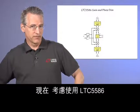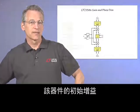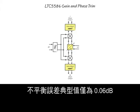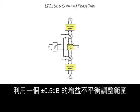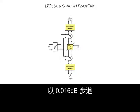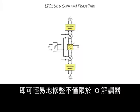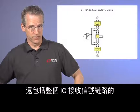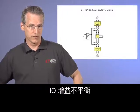Now consider the LTC5586. It has an initial gain imbalance error of only 0.06 dB typical, with an SPI gain imbalance adjustment range of plus or minus 0.5 dB and 0.016 dB steps. You can easily trim out the IQ gain imbalance of not just the IQ demodulator, but the whole IQ receive signal chain.